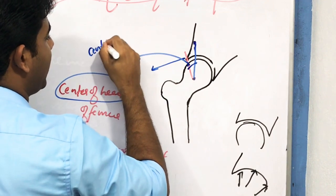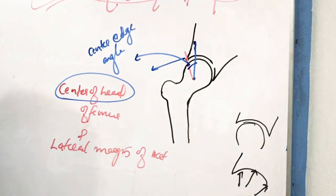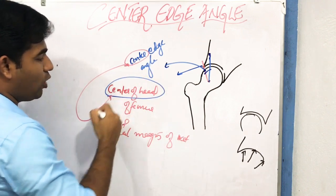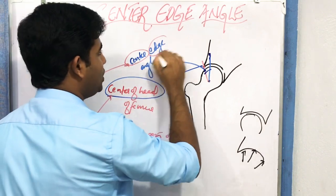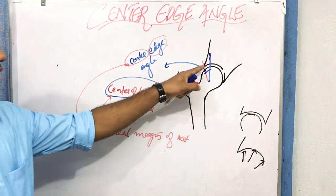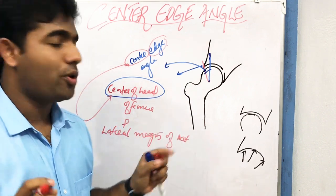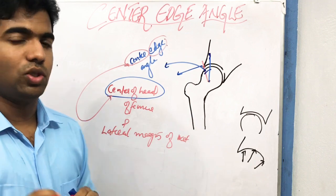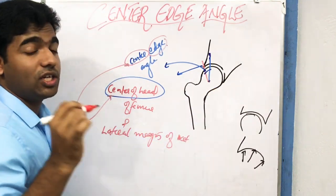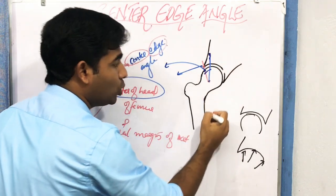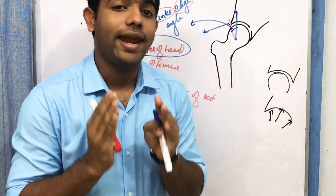The word itself is explanatory: 'center' refers to the center point of the head of the femur, and 'edge' denotes the lateral edge of the acetabulum. So the center edge angle is the angle formed between the line joining the lateral margin of the acetabulum to the center of the femoral head, and the vertical line through the center of the femoral head.